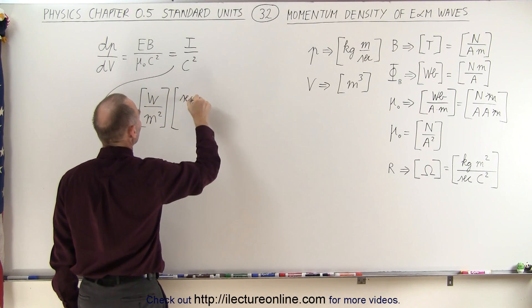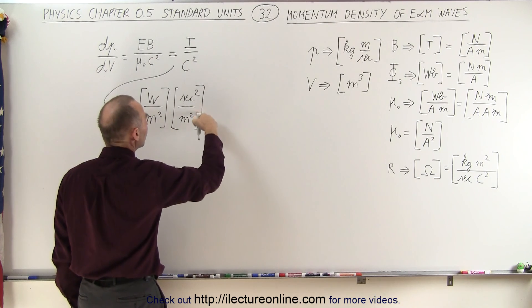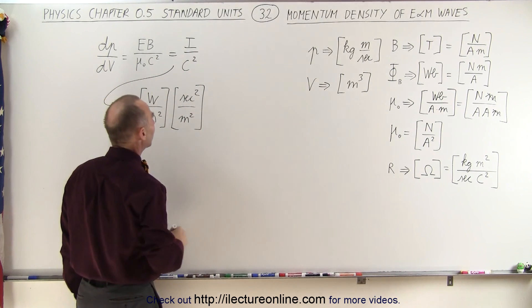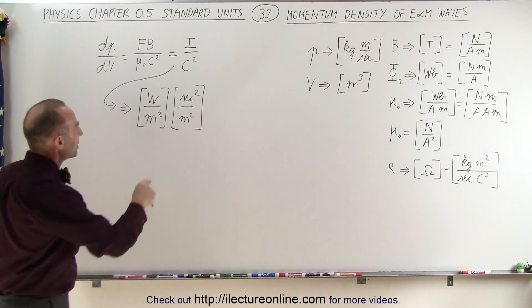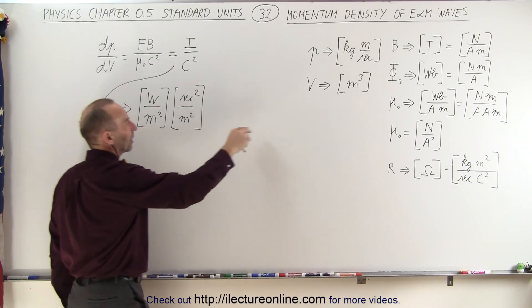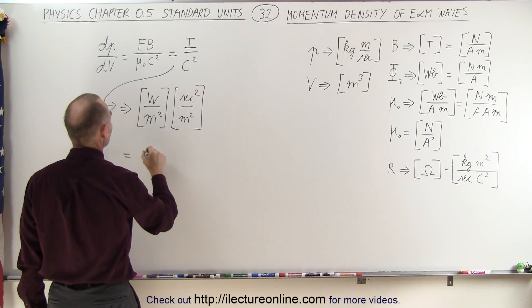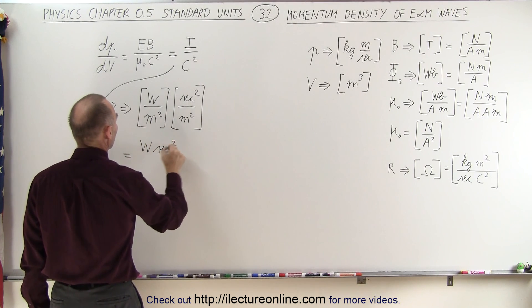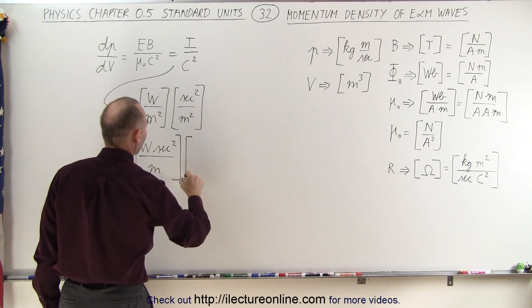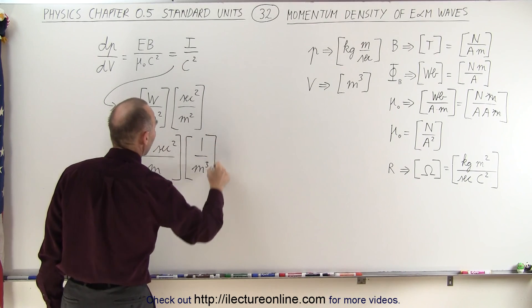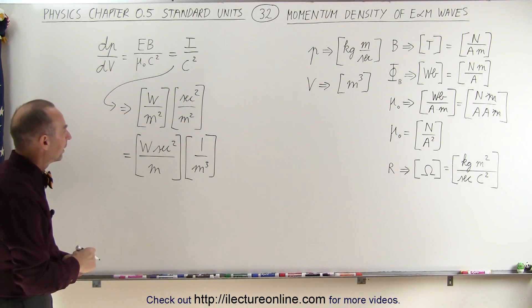That means we have seconds squared in the numerator and meters squared in the denominator — the inverse of the units of the speed of light squared. We now have meters to the fourth in the denominator, so let's factor out a meters cubed. This can be written as watts times seconds squared divided by meters, times one over meters cubed. We already have the unit referring to per unit volume.